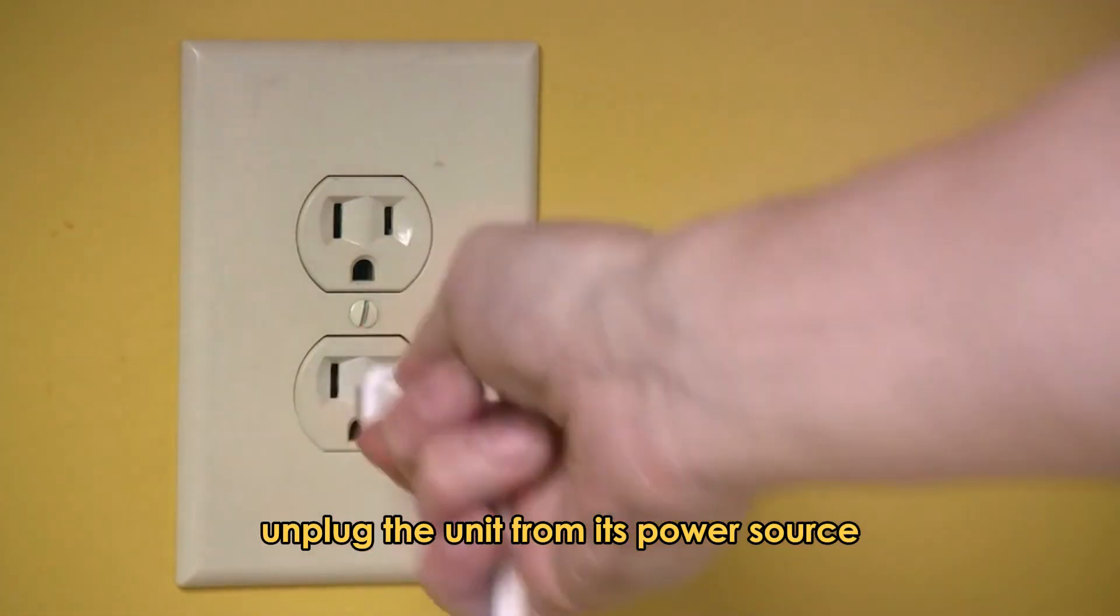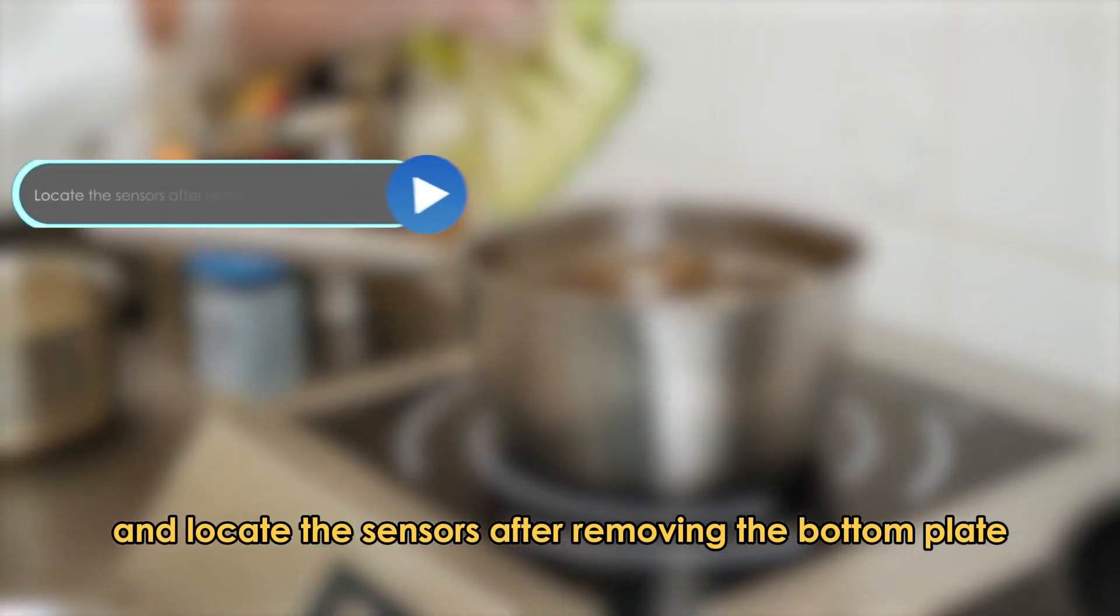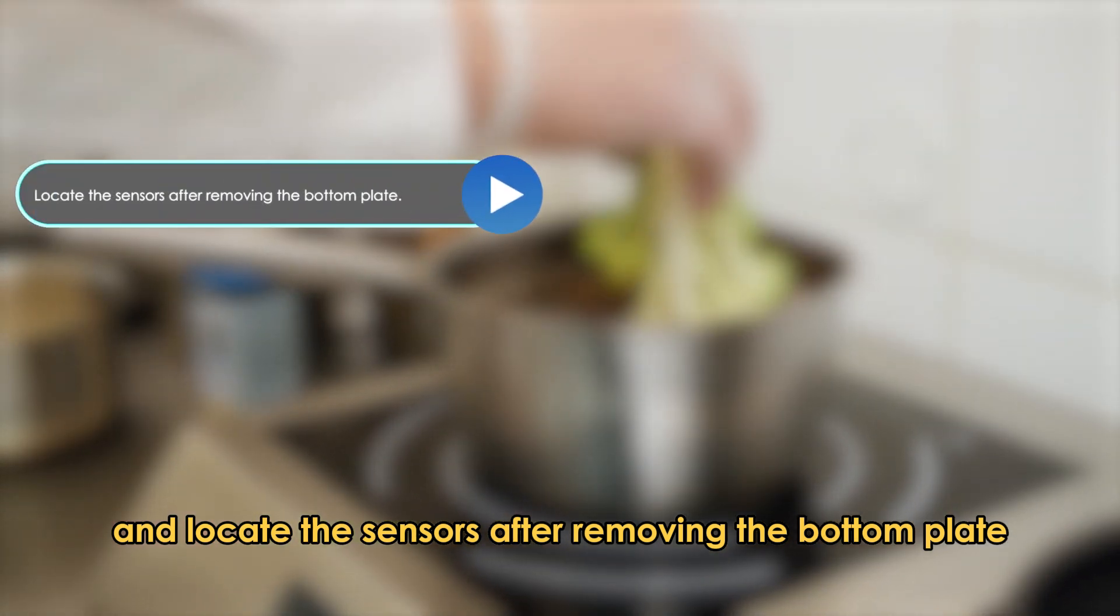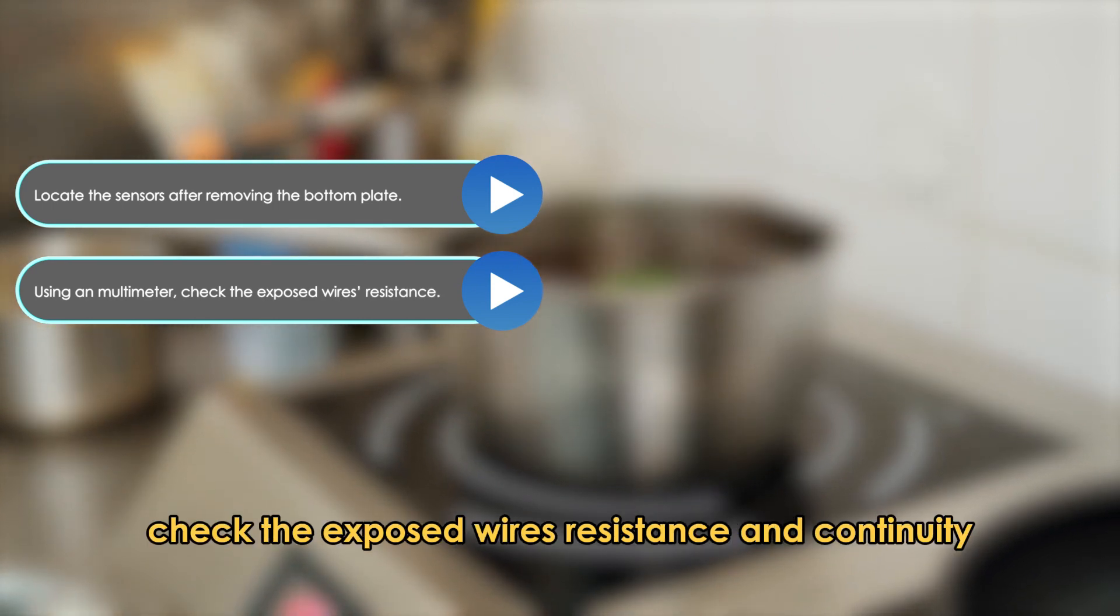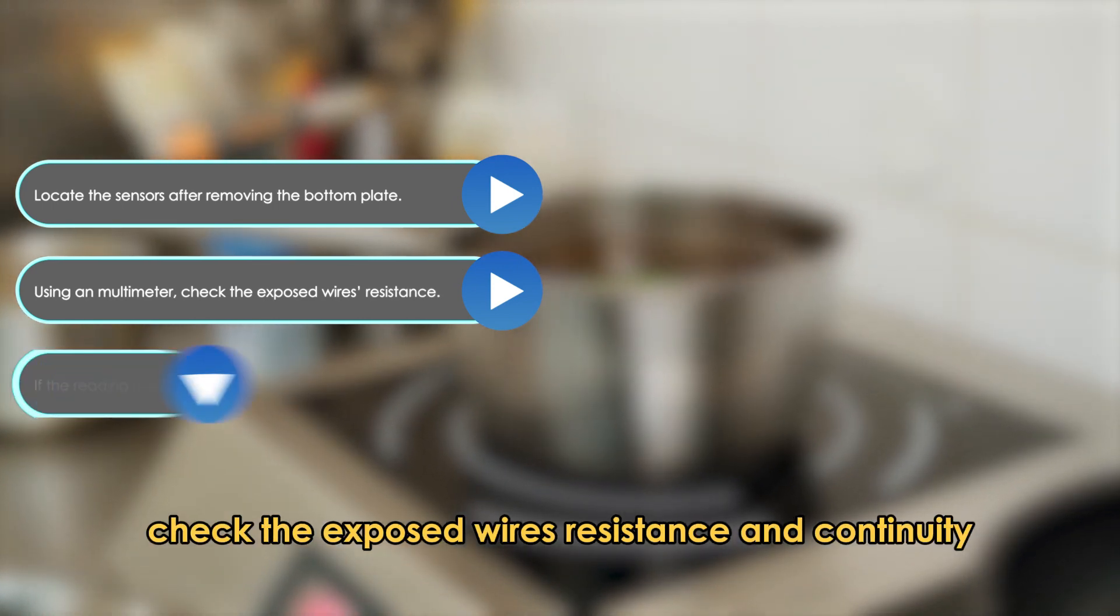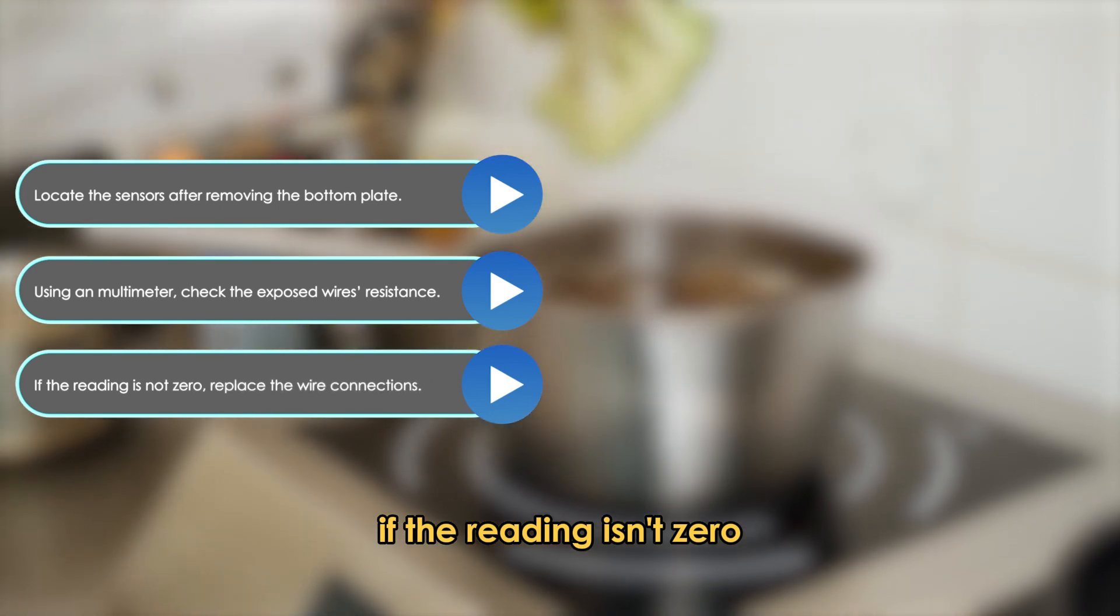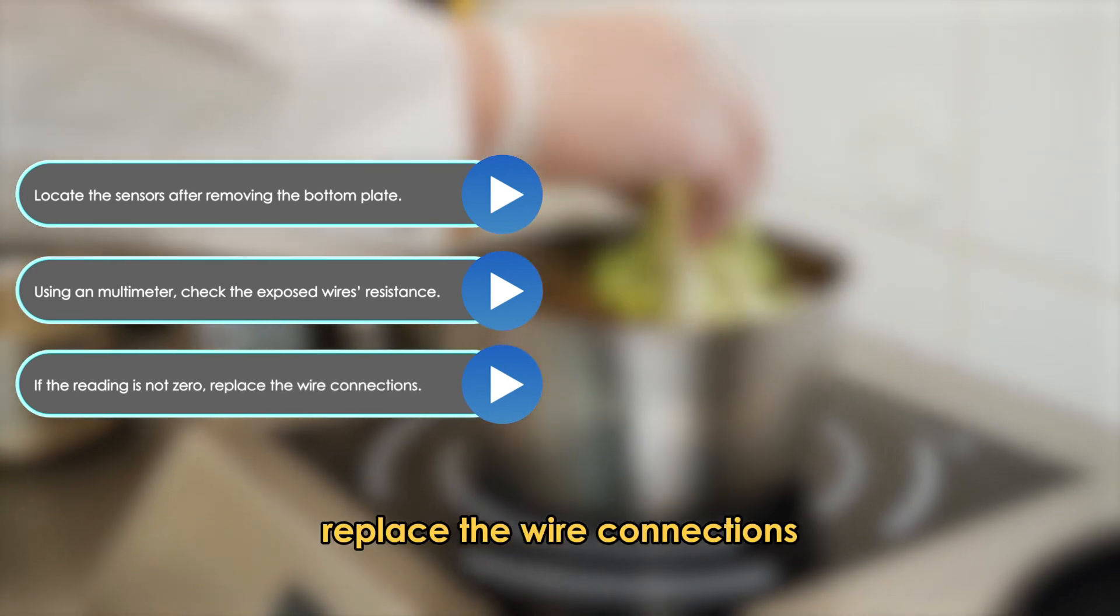Unplug the unit from its power source and locate the sensors after removing the bottom plate. Using an ohmmeter or multimeter, check the exposed wire's resistance and continuity. If the reading isn't zero, replace the wire connections.